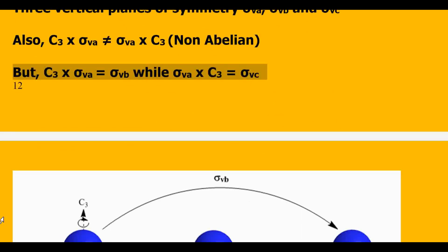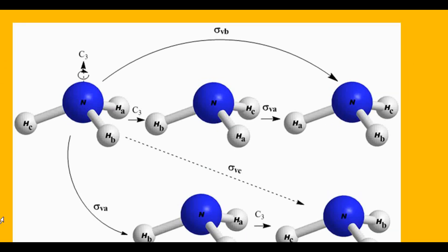While preparing the multiplication table for our C3V point group, we will take this figure as our reference. We have the ammonia molecule and I have labeled the hydrogen atoms as HA, HB, and HC. A line passing through the nitrogen atom is the C3 axis. I have shown the results of various operations carried out on the ammonia molecule. Now let us go straight to the multiplication table.